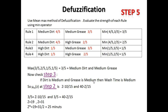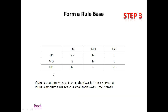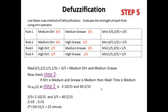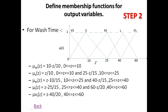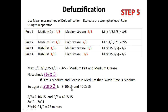If dirt is medium and grease is medium, then the wash time is medium. We then find the membership value of the medium wash time output, labeled z, from step two. The two relevant expressions are (z − 10)/15 and (40 − z)/15. Setting each equal to 3/5 (the min-max result), we solve for z.